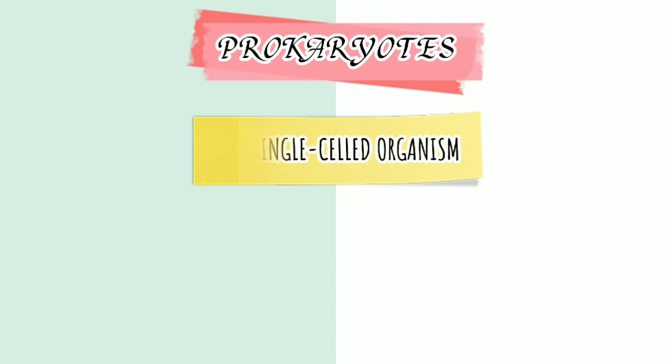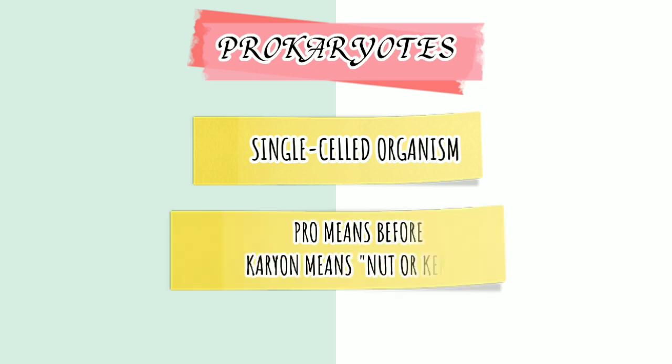Prokaryotes are single-celled organisms that lack a membrane-bound nucleus, mitochondria, and all other organelles. The name comes from the Greek word 'pro,' which means 'before,' and 'karyon,' which means 'nut' or 'kernel.'